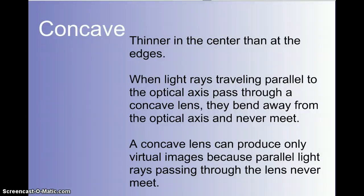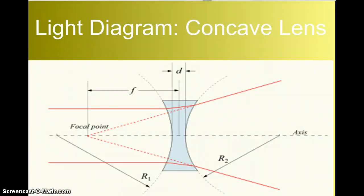Concave lenses, on the other hand, are thinner in the center than they are at the edges. When light rays traveling parallel to the optical axis pass through a concave lens, they bend away from the optical axis, and they never meet. Remember, concave in. The concave lens can produce only virtual images because parallel light rays passing through the lens never actually meet. So, the light rays go out in a concave lens. Here's what that might look like. If we could see the light rays going through, they go in and bend out.